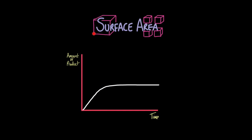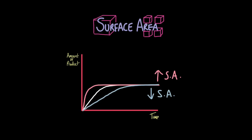Now let's look at the same idea but changing surface area. If we increase surface area by powdering up calcium carbonate or cutting magnesium into smaller pieces, we get a faster rate of reaction — more products formed in the same amount of time — shown as a steeper climb. If we decrease the surface area, having just a big lump, the reaction is slower, represented by a more gentle climb. Notice how they end up at the same point, because the same total amount of product is made.